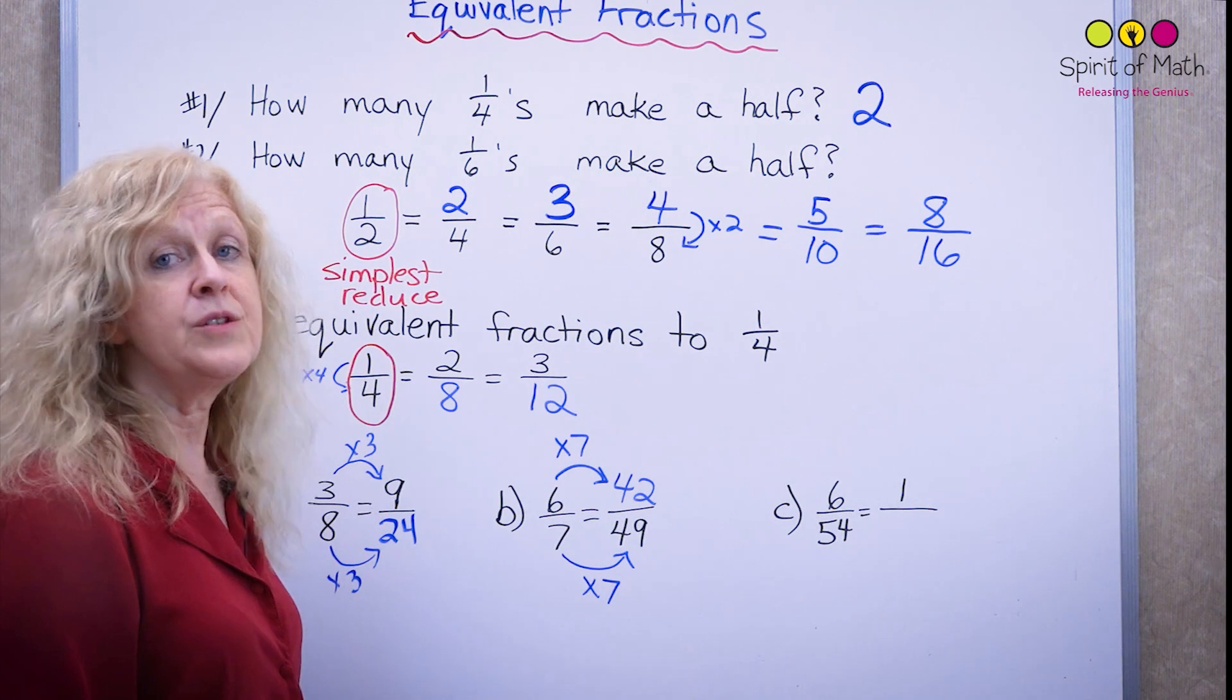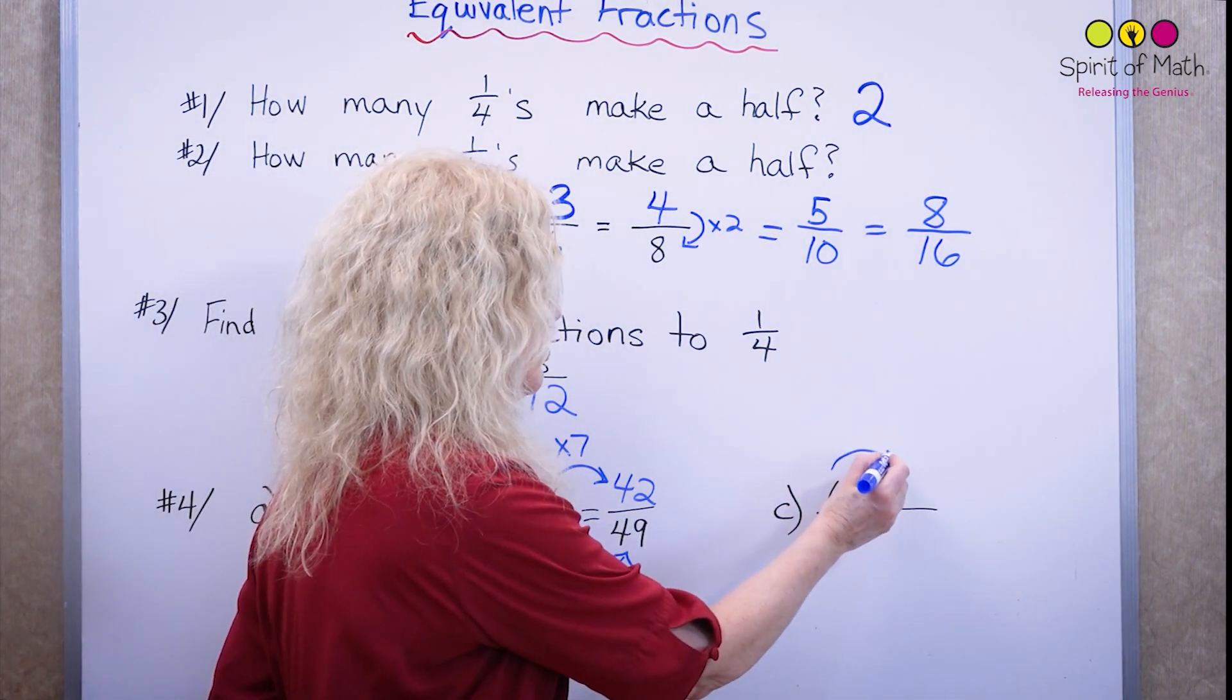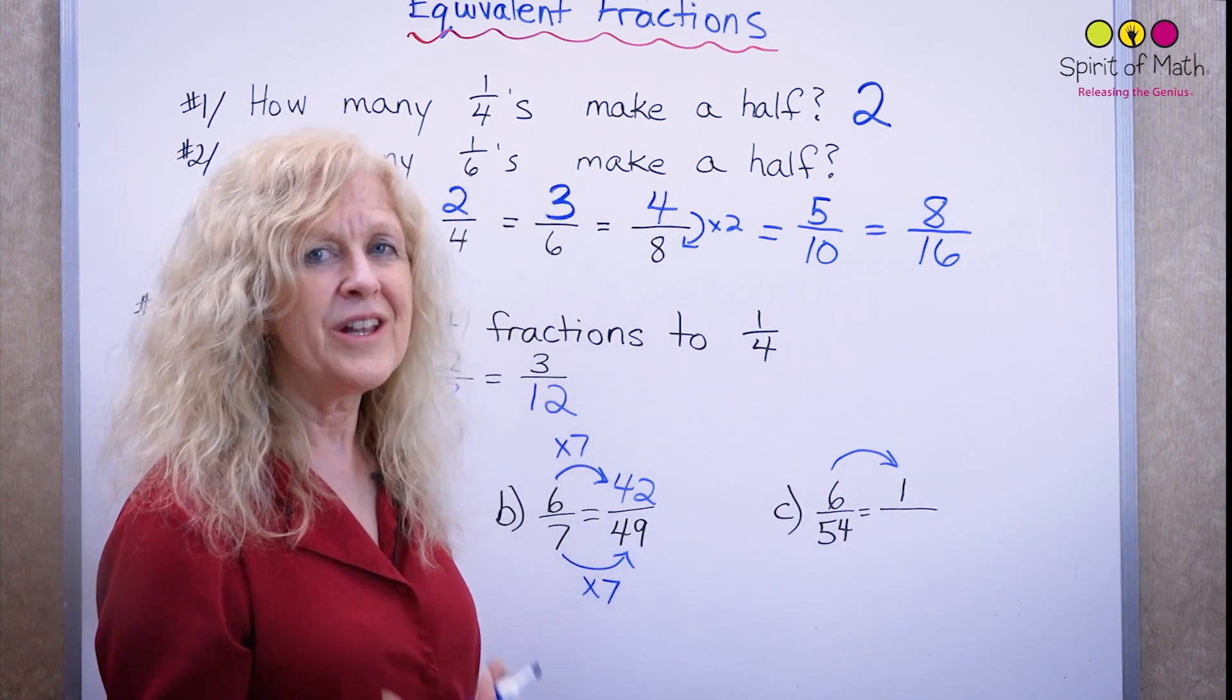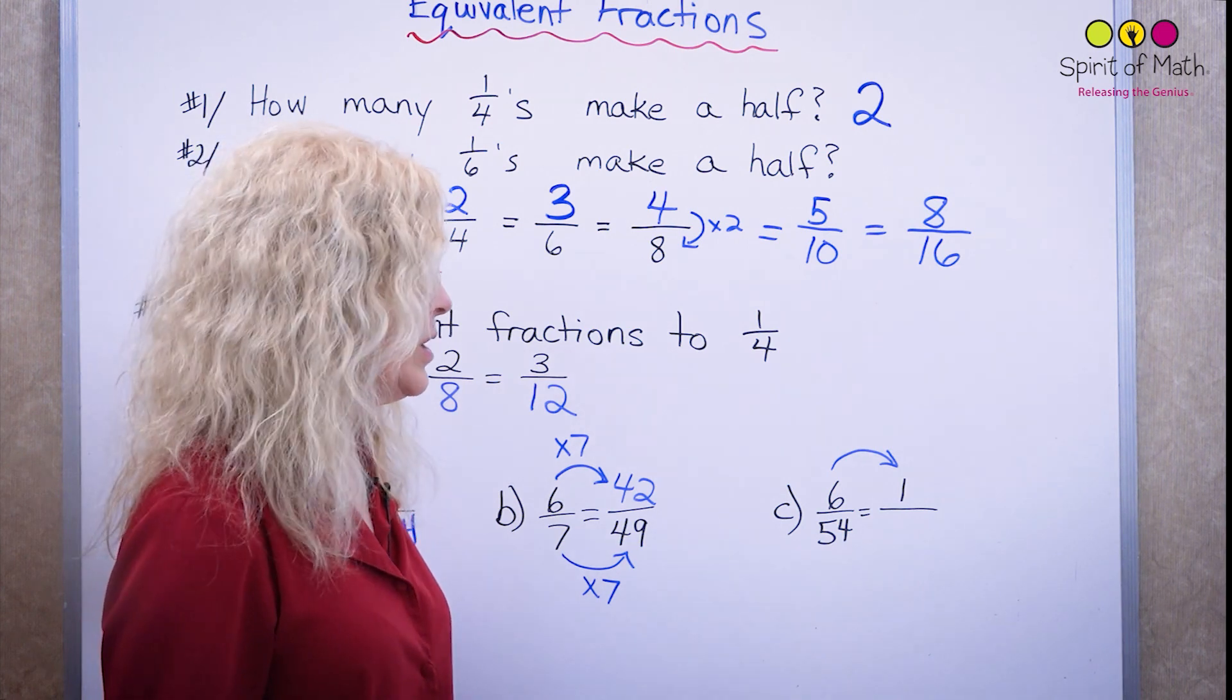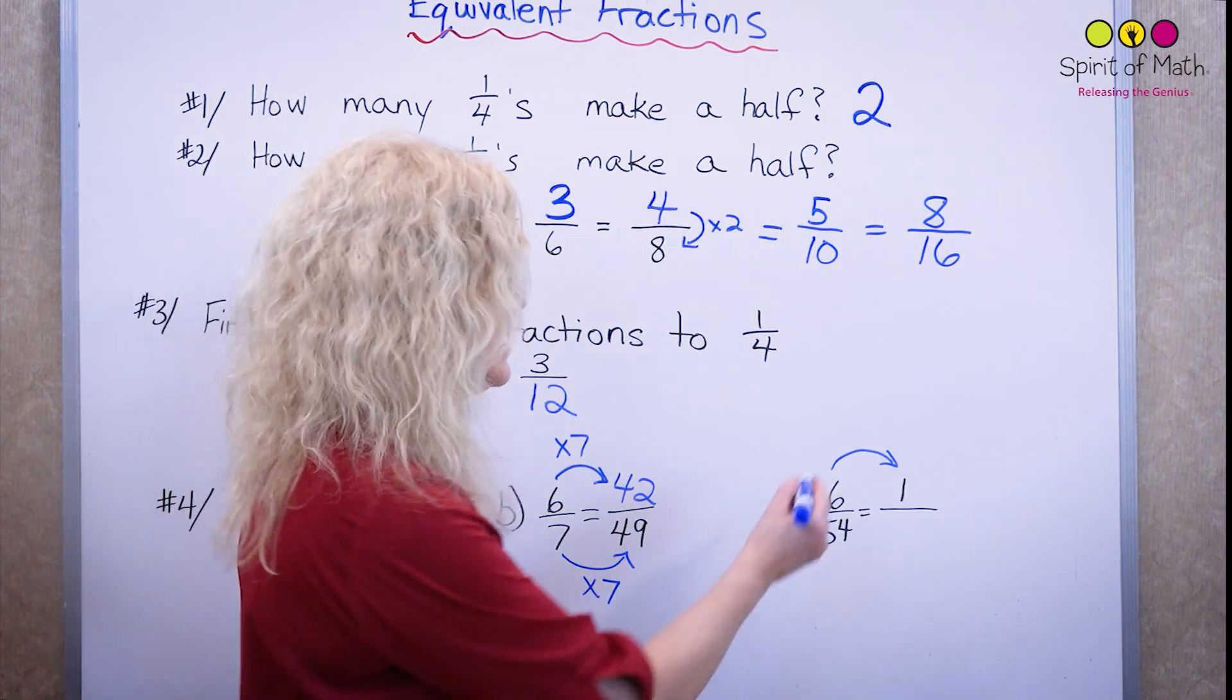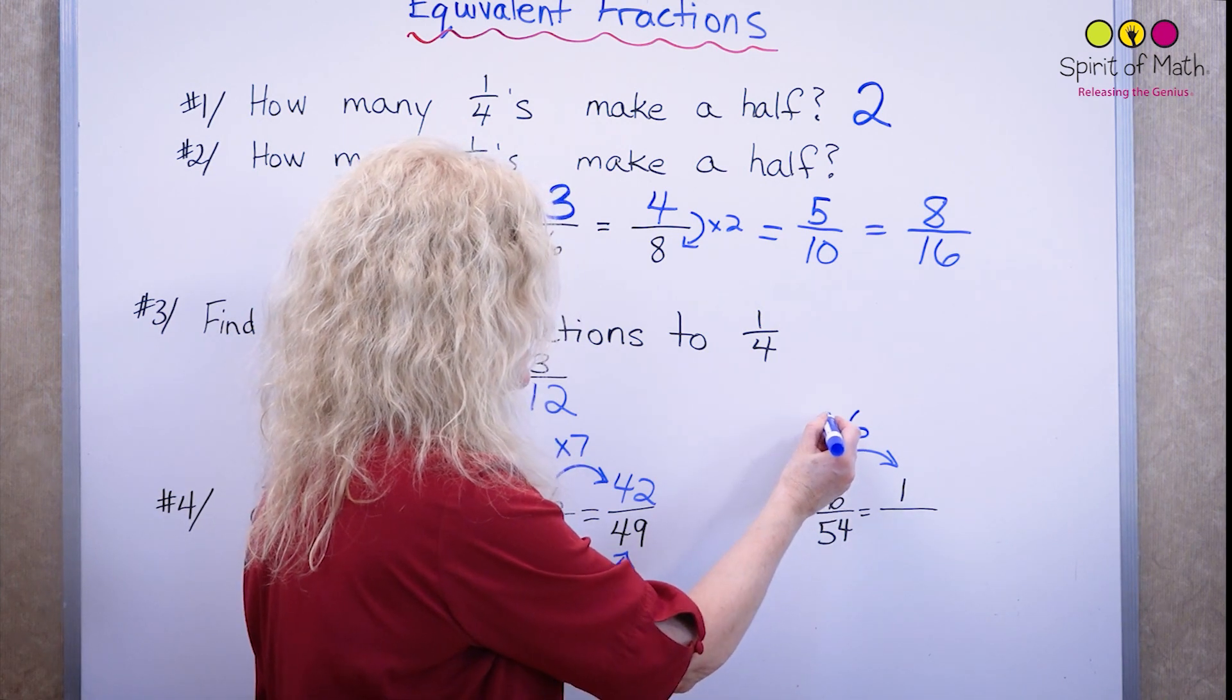And the last one goes six fifty-fourths. Now, uh-oh, six times what is equal to one? Well, another way to think about it is six divided by what is equal to one? Well, six divided by six. And that would be divided by six this time.